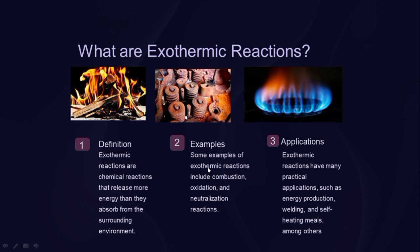The second one is oxidation. The best examples of an exothermic reaction is oxidation. The example of oxidation reaction is rusting of iron. The third one is neutralization reactions. Neutralization reaction is when the reaction between an acid and a base forms water and a salt. For example, hydrochloric acid plus sodium hydroxide gives H2O (water) plus sodium chloride.